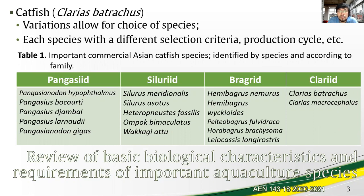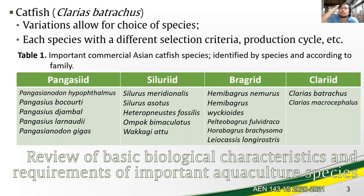Clarias batrachus is the most common, commercially marketable species in the Philippines, which is why we are going to tackle that. Please consider that there are variations allowing for the choice of species, or multiple species in a multi-species system, each with different selection criteria and production cycles. We'll leave the rest of the other species for you to look into, using Clarias batrachus as the basis.